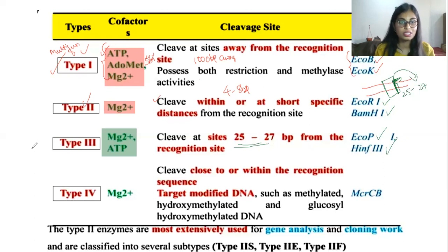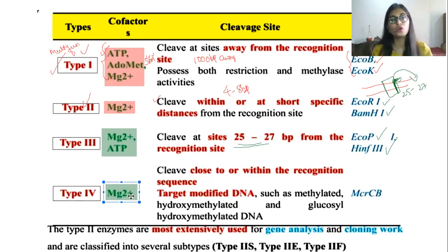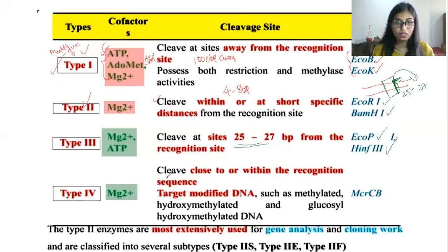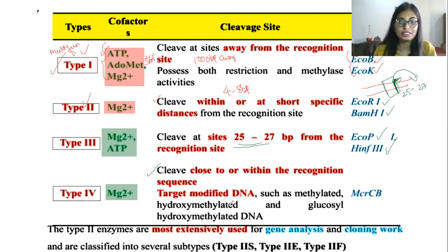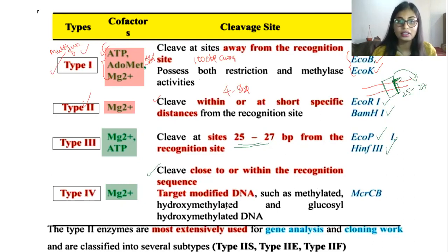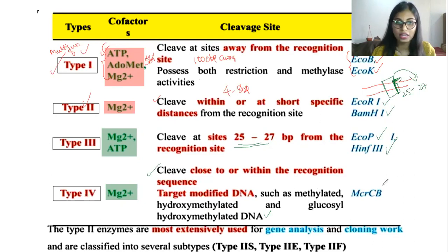Type four restriction endonuclease has only one cofactor, that is magnesium. It cleaves close to or within the recognition sequences and targets modified DNA — such as methylated, hydroxymethylated, and glucosyl hydroxymethylated DNA. Only modified DNA will be targeted and cleaved. An example for this type four restriction endonuclease is McrBC.